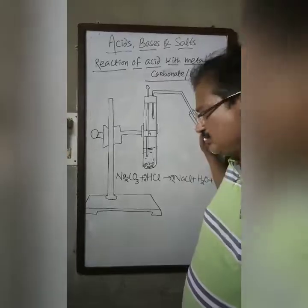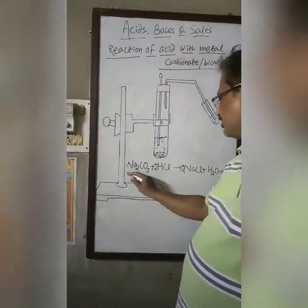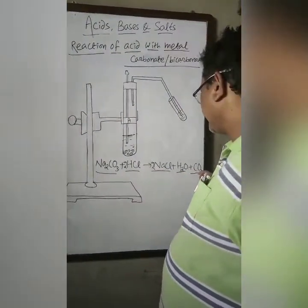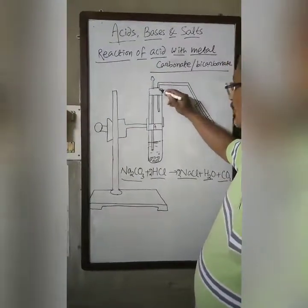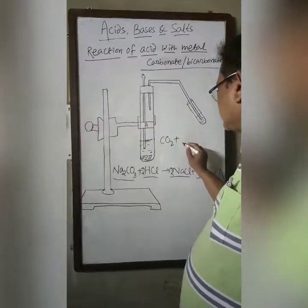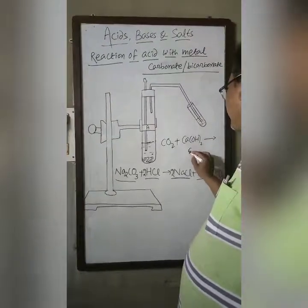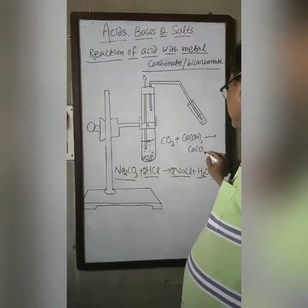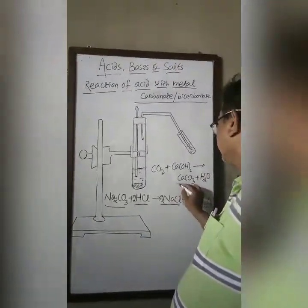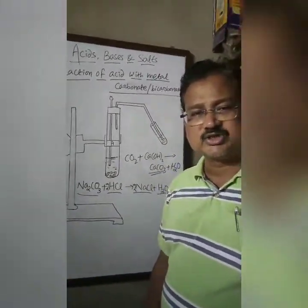The reaction taking place is: sodium carbonate reacts with dilute hydrochloric acid to produce sodium chloride, water, and carbon dioxide. The carbon dioxide gas passes through the tube into the lime water. When carbon dioxide passes through lime water, it produces calcium carbonate and water. The milkiness is due to the formation of insoluble calcium carbonate.